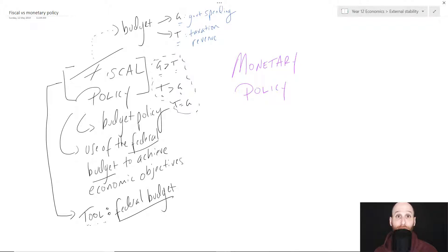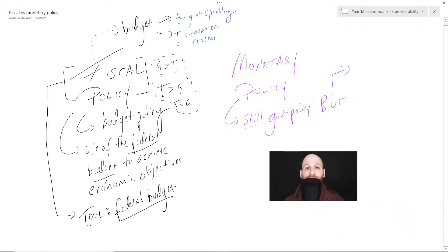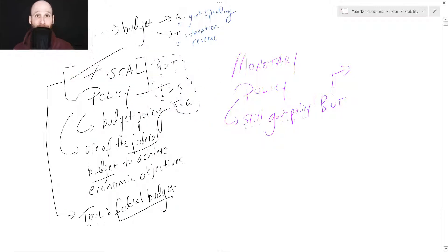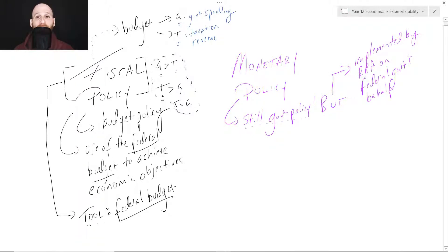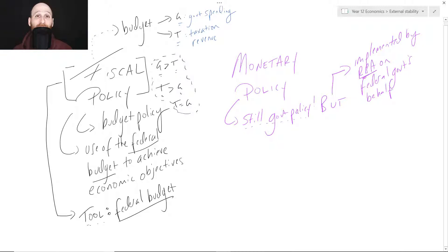So let's switch over to monetary policy. Monetary policy is still technically government policy. If a question asks you about government policies, just be clear that at least in the New South Wales HSC context, you definitely should talk about monetary policy because it is still government policy. But in Australia, it is implemented by the Reserve Bank of Australia on the federal government's behalf. So it's independent of government, but it's still government policy, implemented by the RBA.